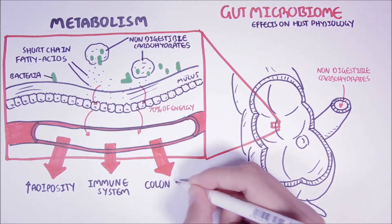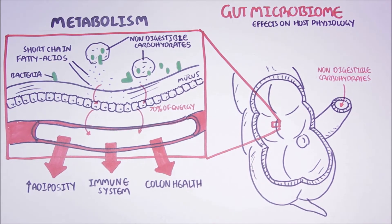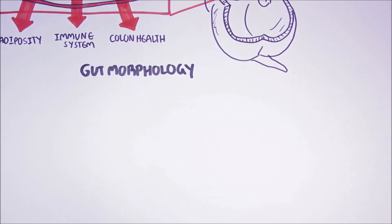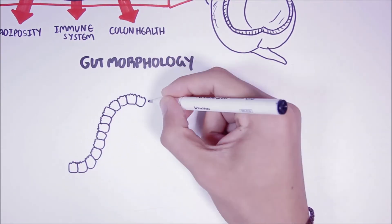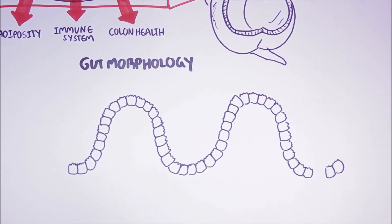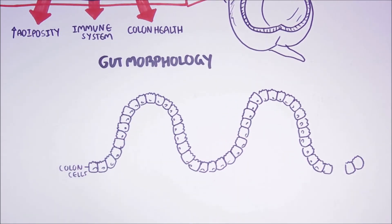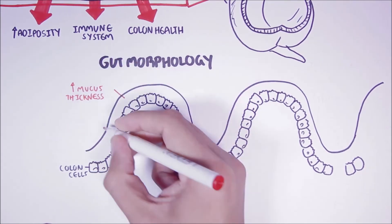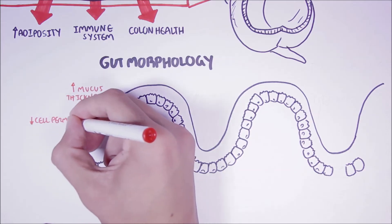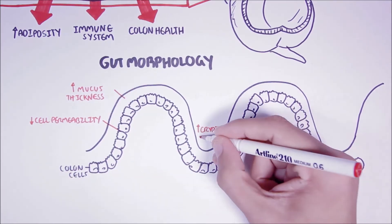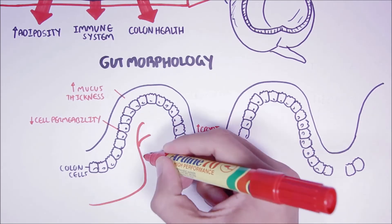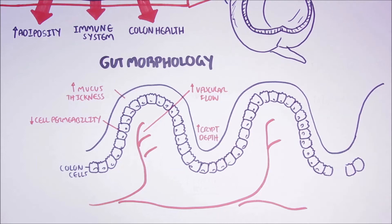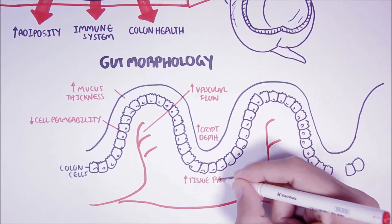Another fundamental effect the gut microbiota play in our body is its effect on gut morphology, so gut structure. These effects include increasing the amount of mucus in the intestinal tract, decreasing intestinal cell permeability, deepening the crypts of the intestine, increase vascular flow, and stimulate tissue repair and renewal, particularly the villi.